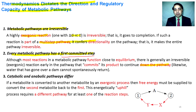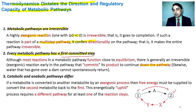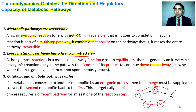Catabolic and anabolic pathways differ. Usually when one reactant is converted to a product it adopts one pathway. When that product needs to be converted back, it takes a different path other than the one during which it was formed. This reverse path usually requires energy from outside and involves endergonic reactions, while the forward reactions are exergonic. This is how the direction of a pathway is determined by the exergonic and endergonic nature of forward and reverse reactions.